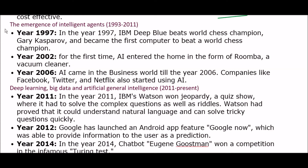The next phase of AI is the emergence of intelligent agents, from 1993 to 2011. In 1997, IBM Deep Blue beat world chess champion Garry Kasparov, becoming the first computer to beat a world-class chess champion. In 2002, for the first time, artificial intelligence entered the home in the form of Roomba, a vacuum cleaner. By 2006, AI came into the business world, and companies like Facebook, Twitter, and Netflix also started using artificial intelligence.